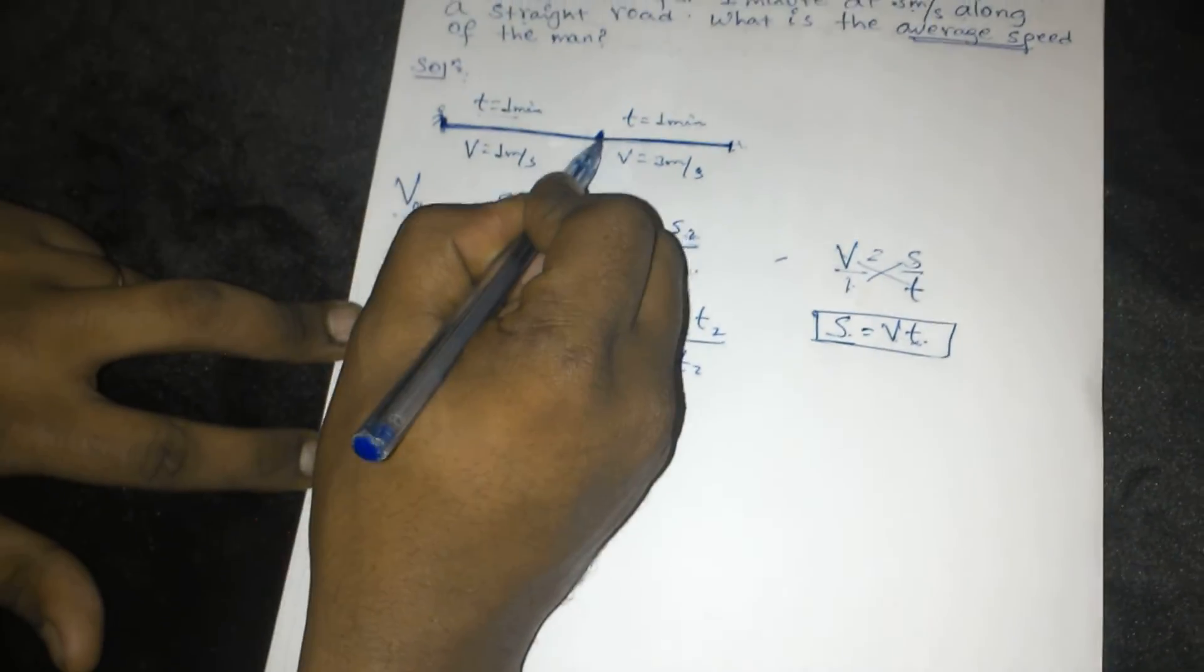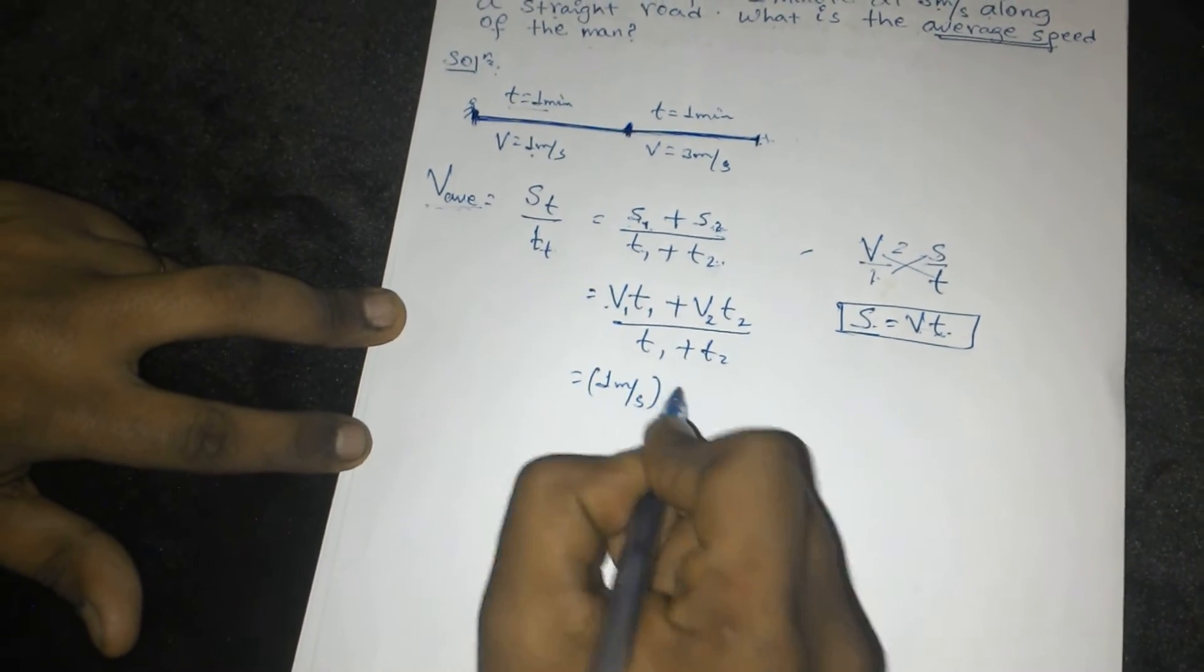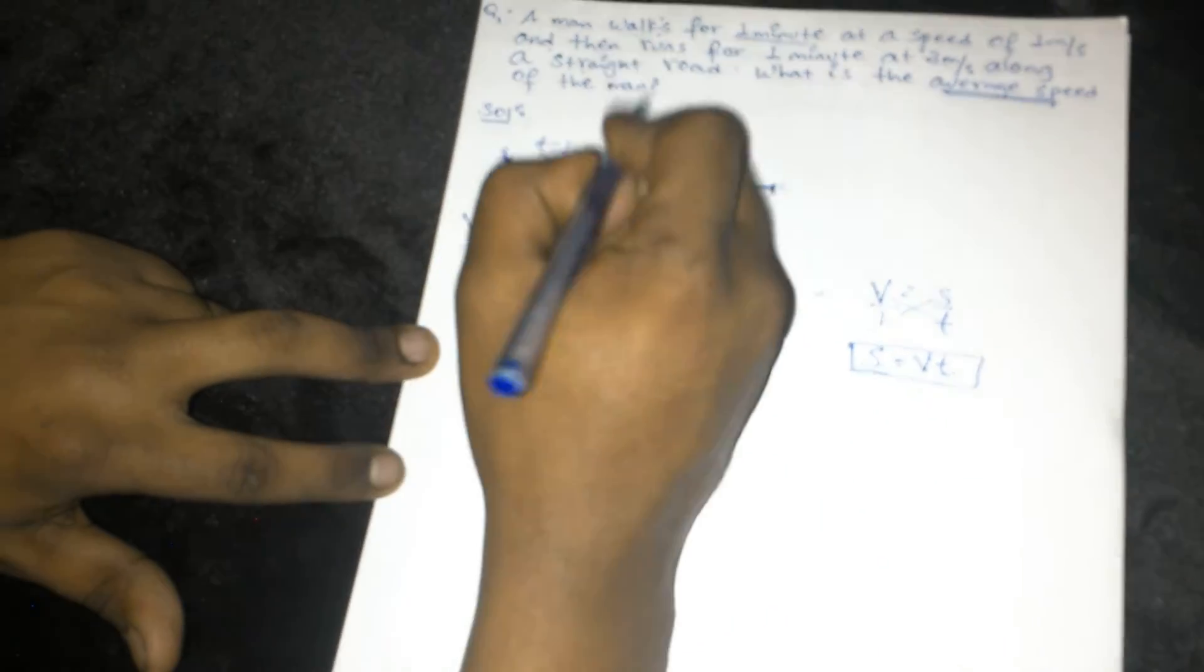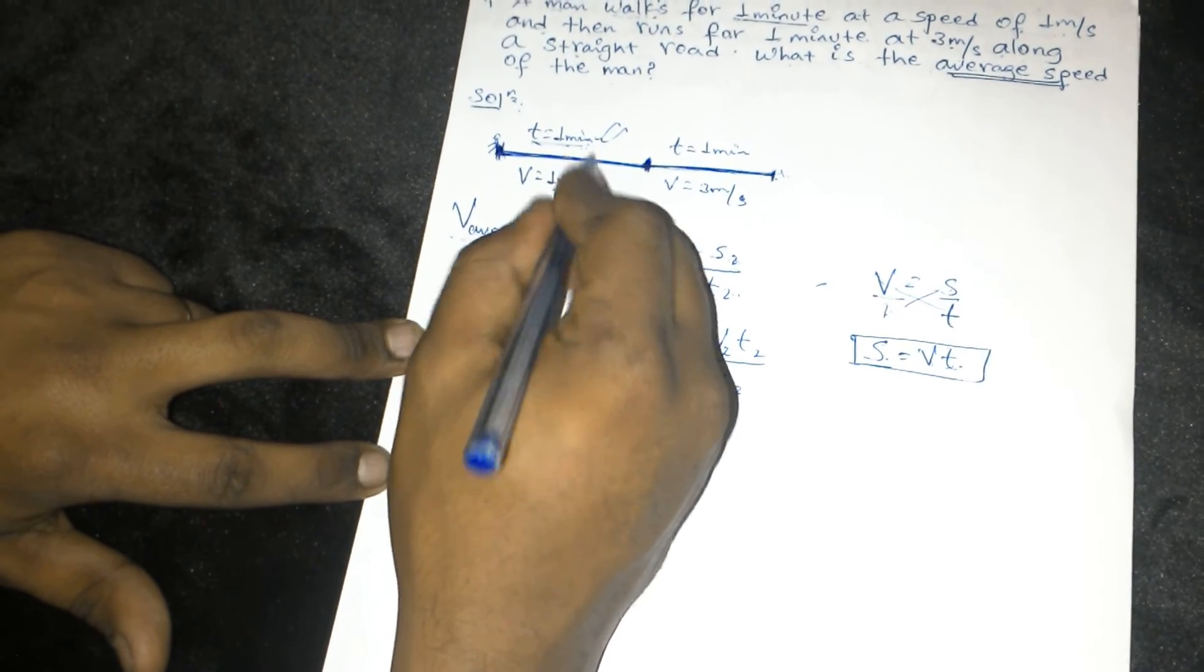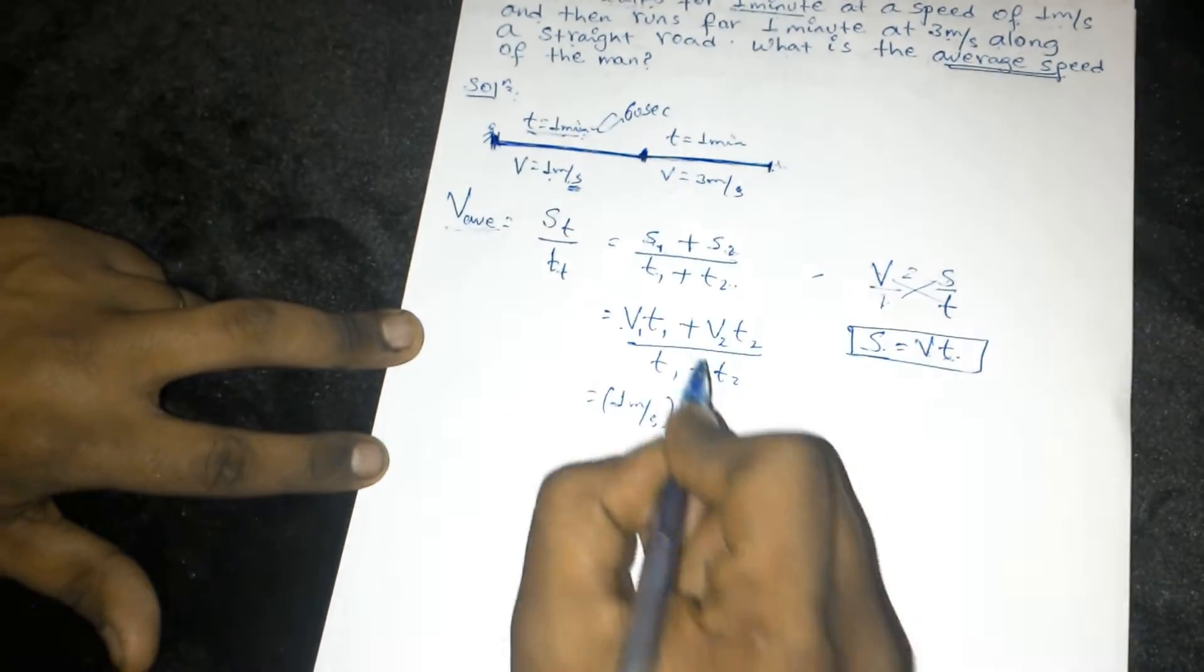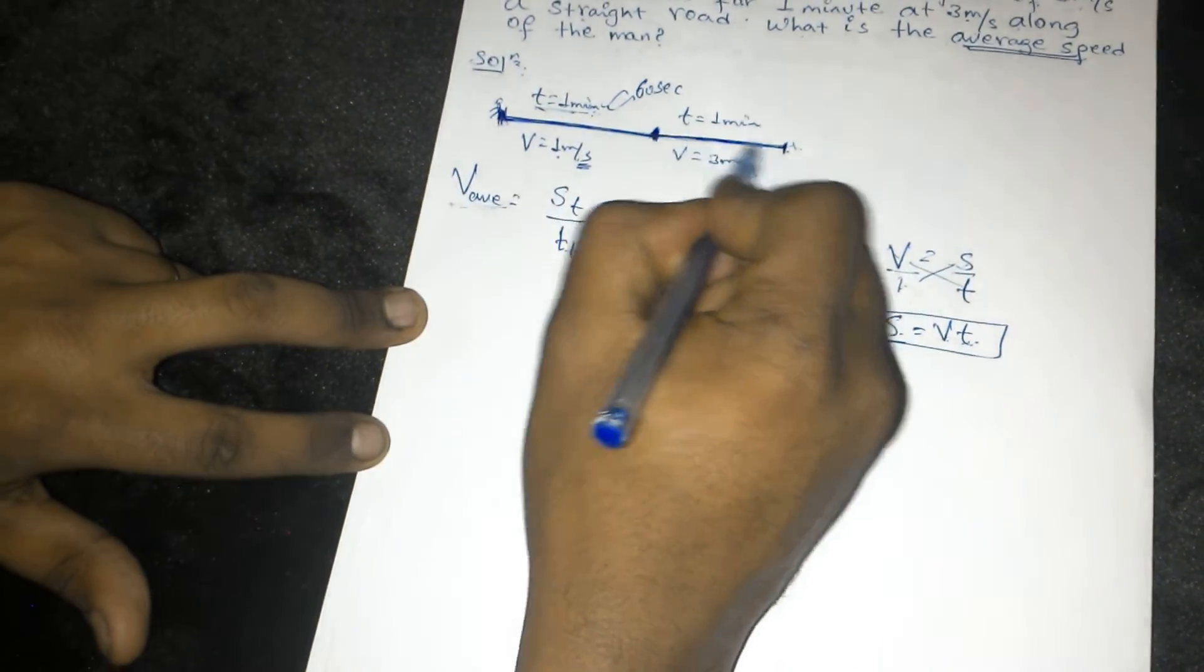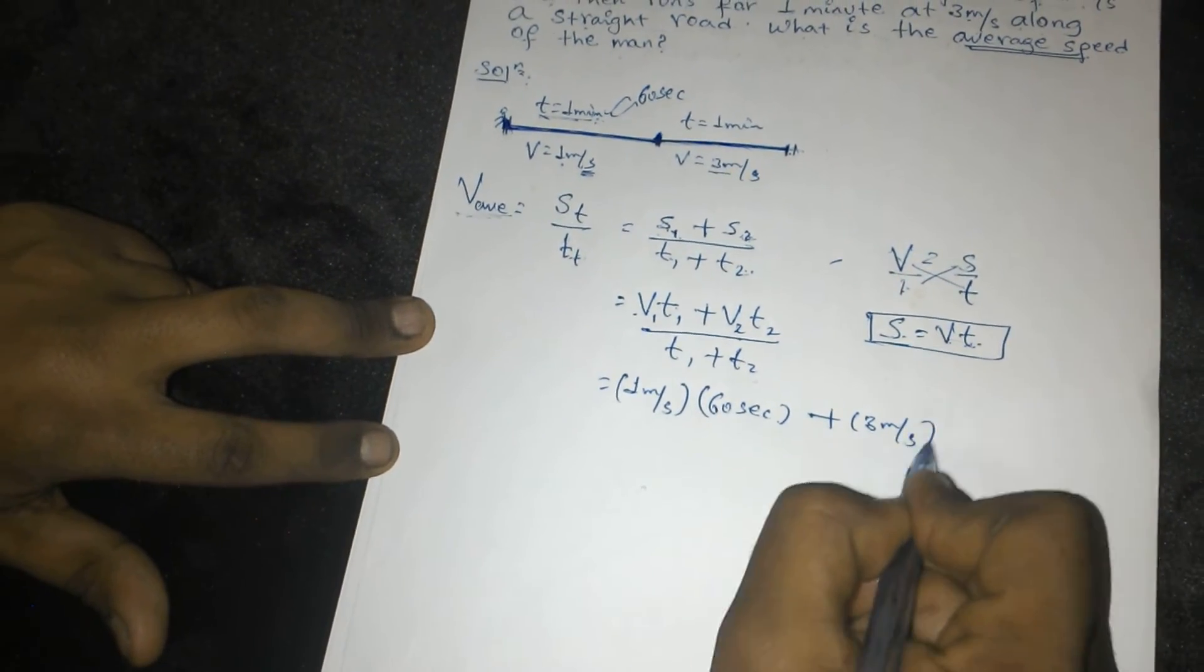V1 is equal to 1 meter per second, and T1 is 1 minute. V2 is equal to 3 meters per second, and T2 is 1 minute.